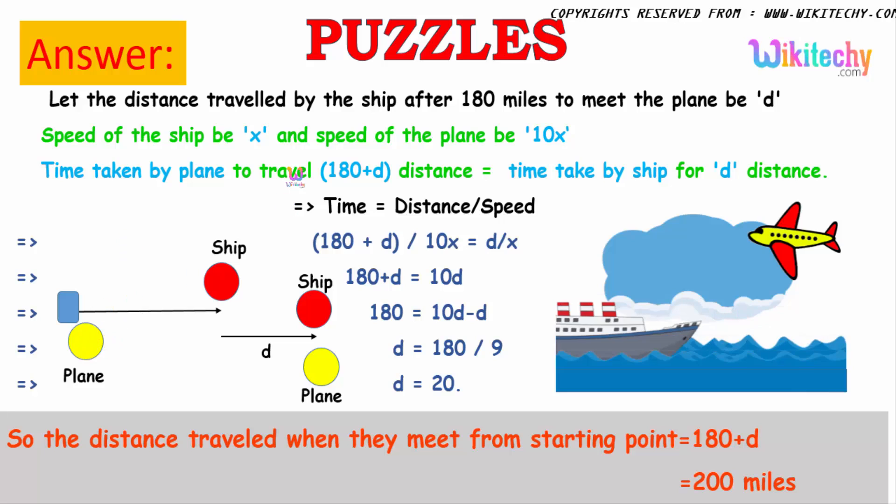So the speed of the ship is x and speed of the plane is 10x. For them the time is equal. Time taken by the plane to travel 180 plus d is equal to time taken by the ship for d distance. So time is equal to distance by speed. So 180 plus d divided by 10x for the plane is equal to d divided by x for the ship.